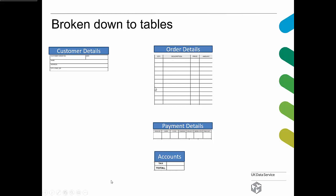What we really need to do is relate a particular customer with what they ordered, how they wanted it delivered, and how much money the store received. This is where the relationships come in. We need to create relationships between these three tables and link them back to the customer details table using a unique customer order number. That number will appear in each of the three tables, so for any one of them we can relate it back to the specific order and customer number.